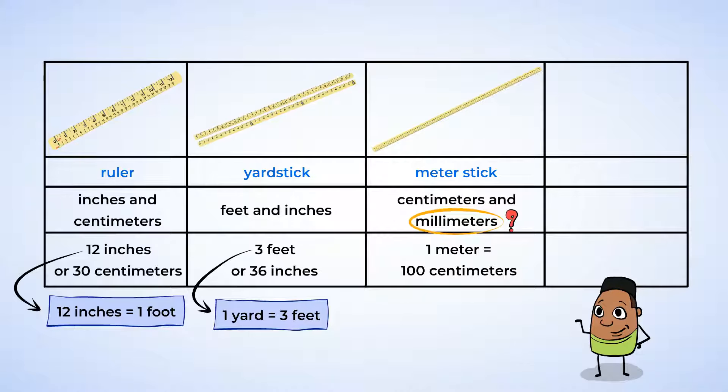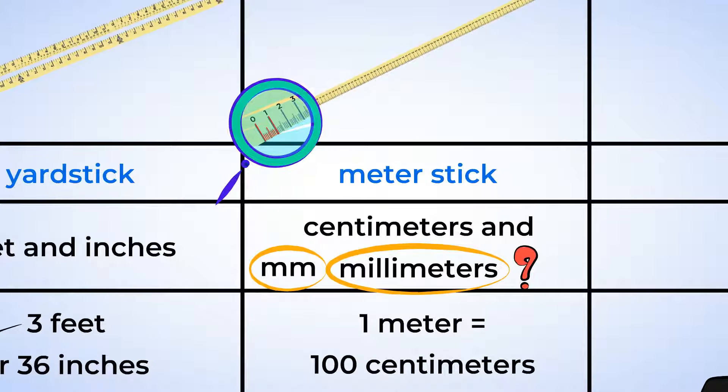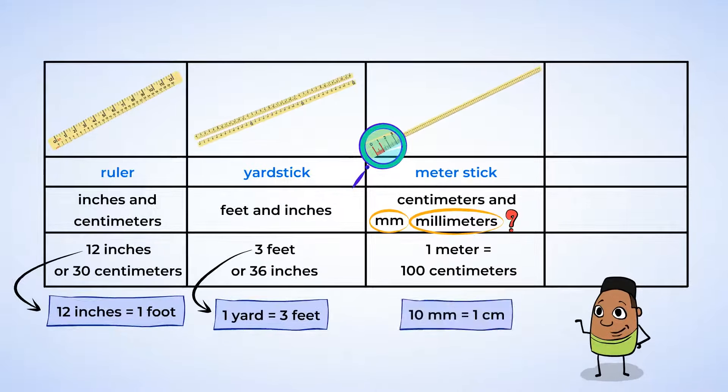You may also ask, what is a millimeter, or mm, as it's written on the meter stick? Well, these are the little tiny marks in between each centimeter. And so 10 millimeters will equal 1 centimeter.